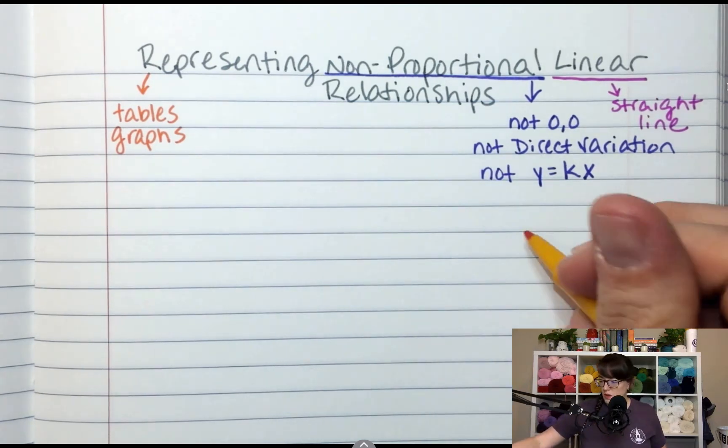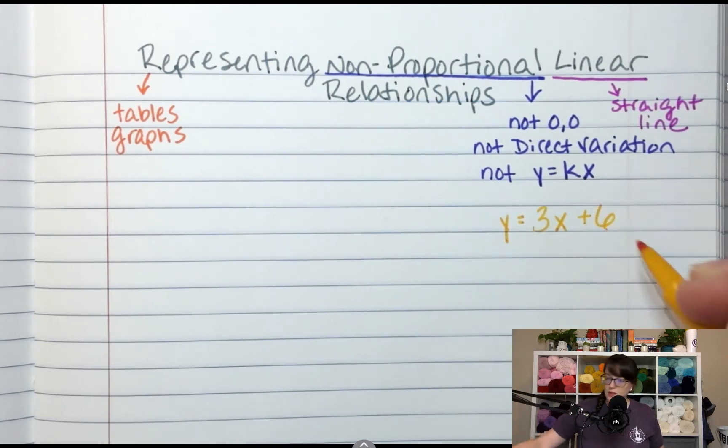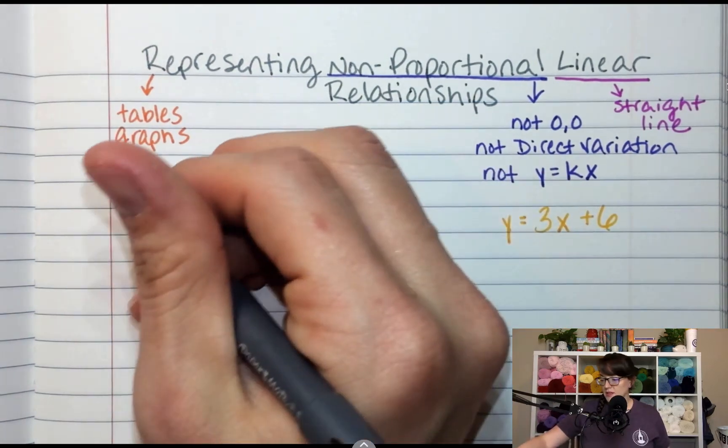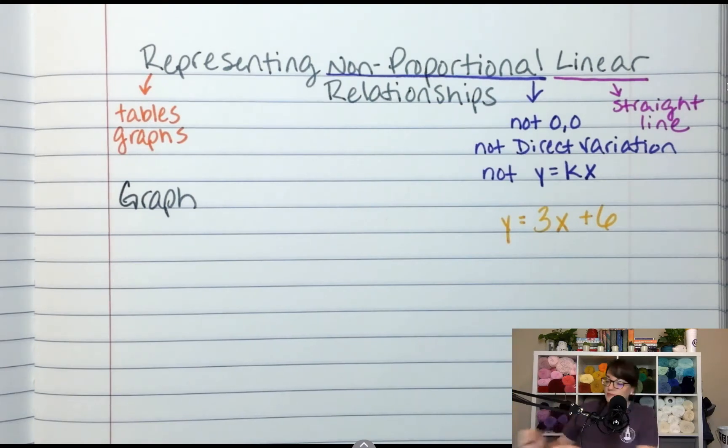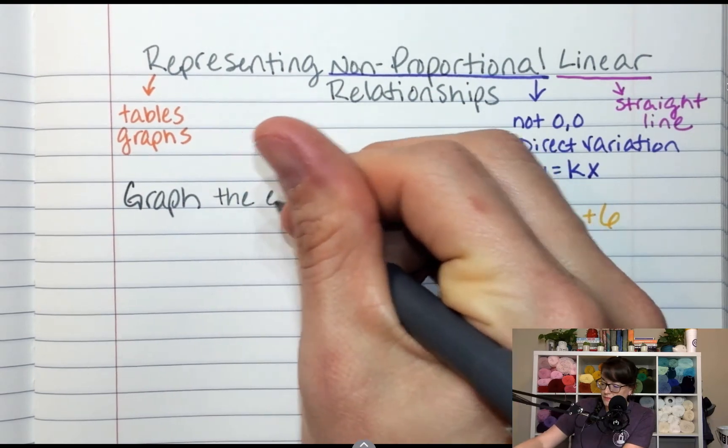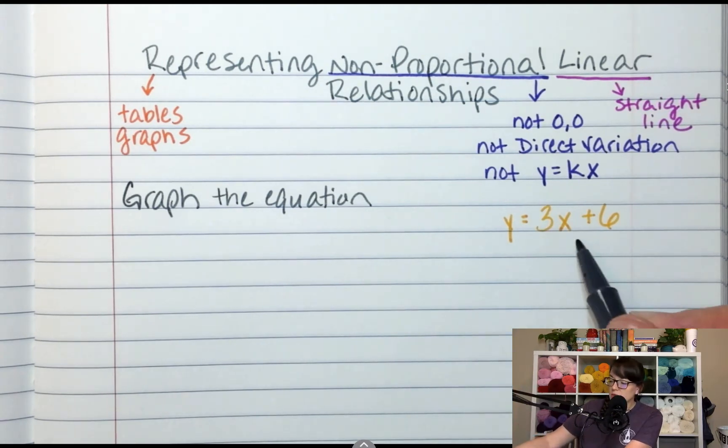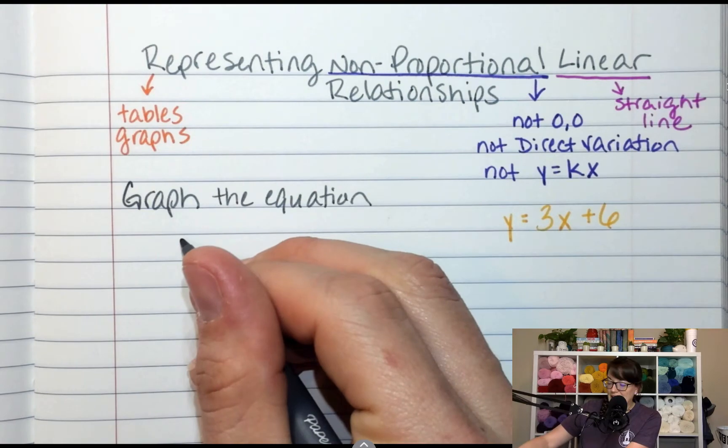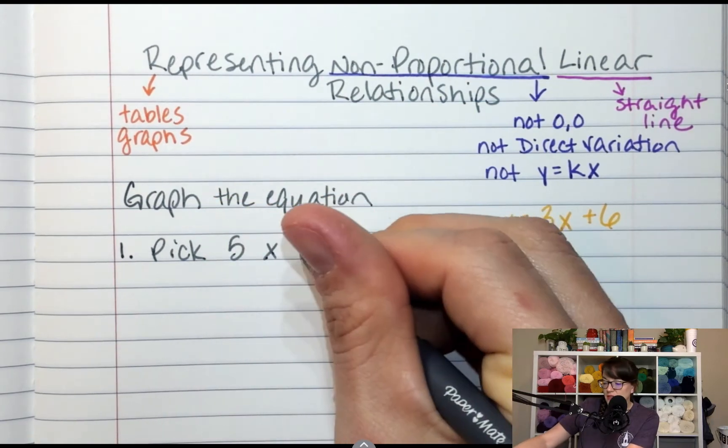If you start with the equation, y equals 3x plus 6. Now, they may say, okay, graph that. But there's no x's and y's. So what you're going to do is you're going to pick x's and y's. So if we wanted to graph this, we'll start with graphing. Actually, we're going to, it's going to be both. Okay, so if I wanted to graph the equation, first thing I'm going to have to do is make a table. So I don't know x's and y's, but I can pick any x. So step one, we're going to pick 5 x values.